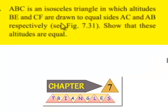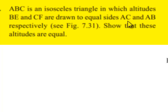Moving on to the third question. ABC is an isosceles triangle in which altitudes BE and CF are drawn to equal sides AC and AB respectively. Show that these altitudes are equal.